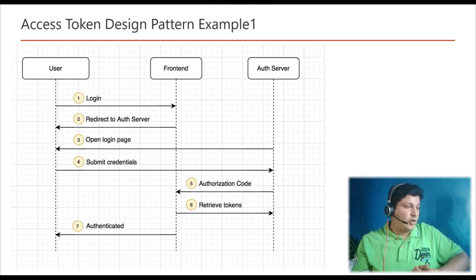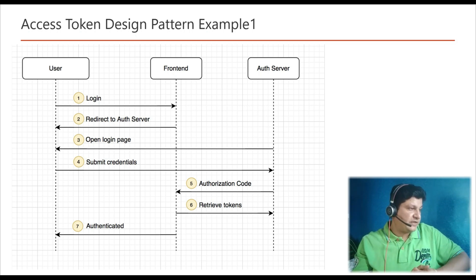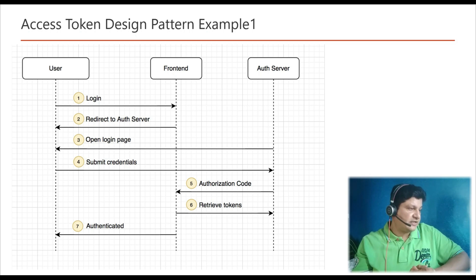Let's understand how the access token pattern works. In this setup we always have an authorization server, whose responsibility is to issue a token. In this diagram, the user opens a front-end UI and wants to log in. The front-end application redirects the user to the auth server. The auth server displays a login page, and the user enters their credentials. If the credentials are valid, the auth server sends an authorization code to the front-end, which then retrieves a token from the auth server, completing the authentication process.